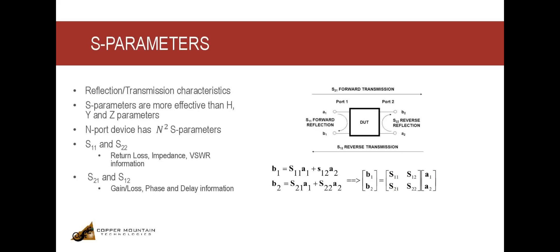Likewise, an incident power wave at port 2 is indicated by A2, and this would result in waves B1 and B2.